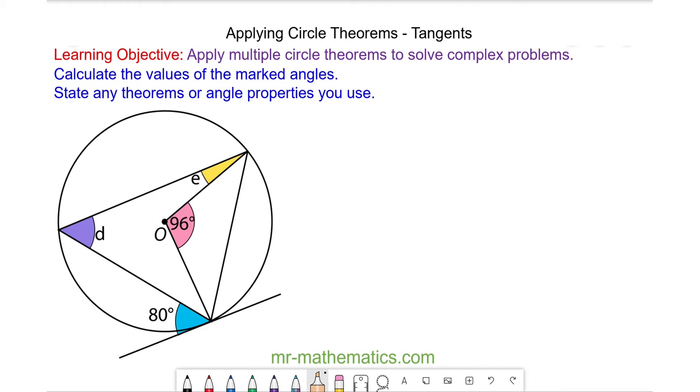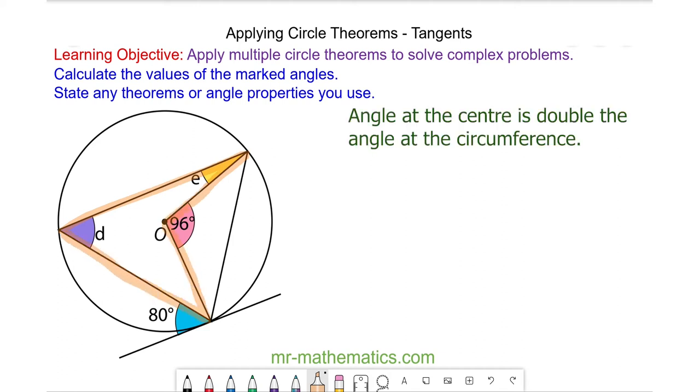Okay, I can work out angle d using the angle at the center is double the angle at the circumference, which means angle d will be half of 96, which is 48 degrees.